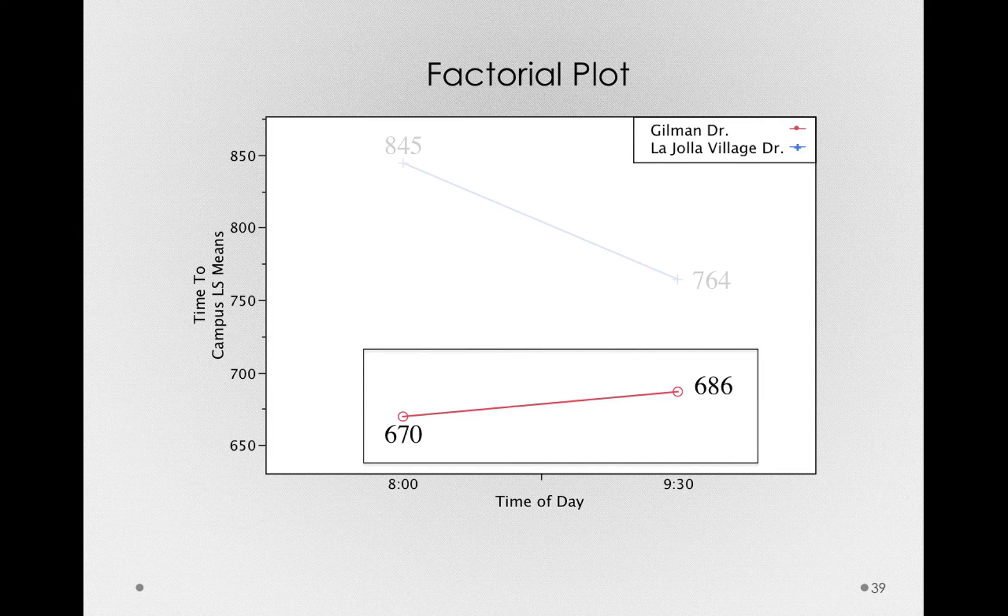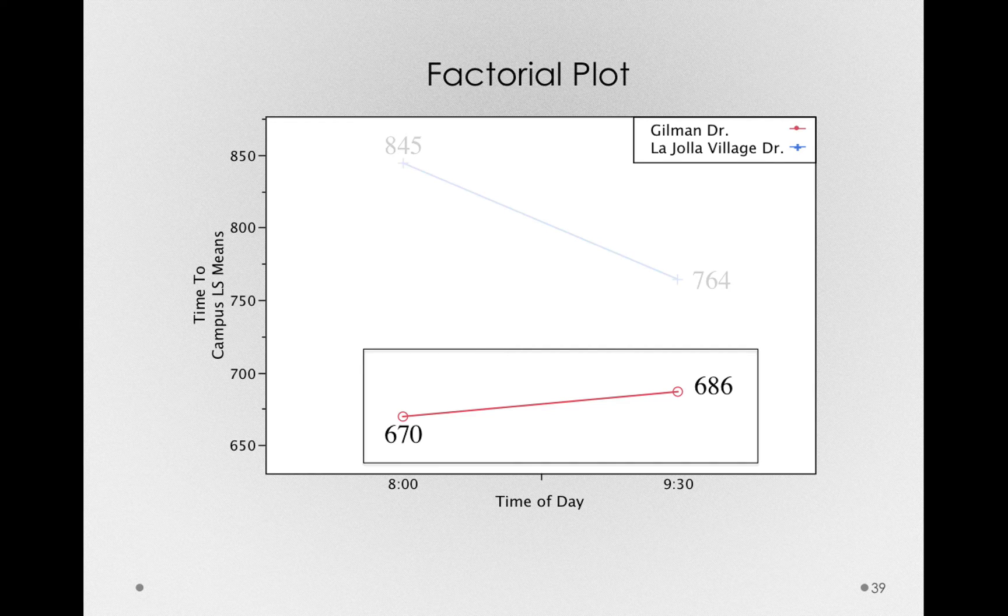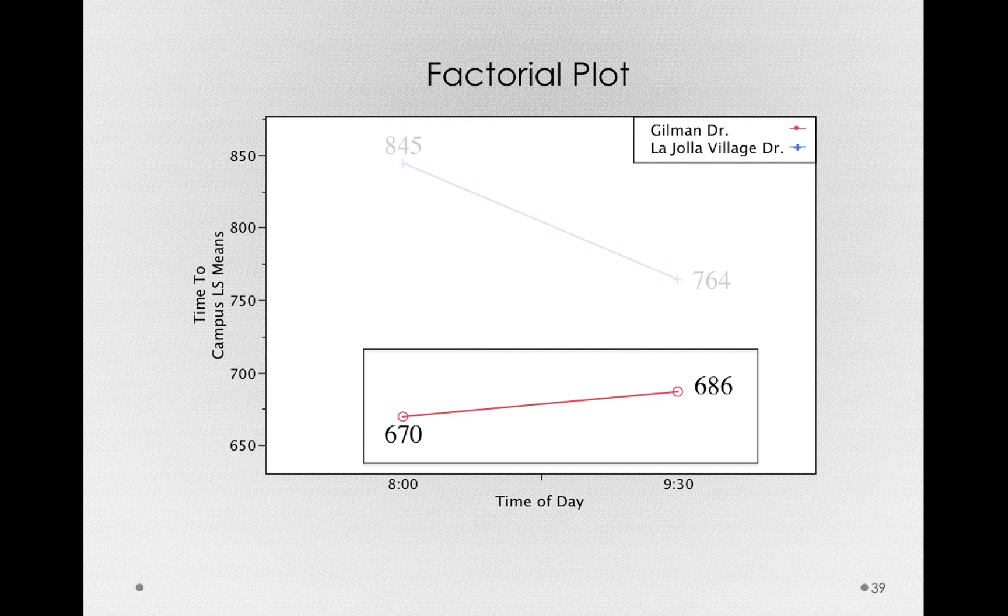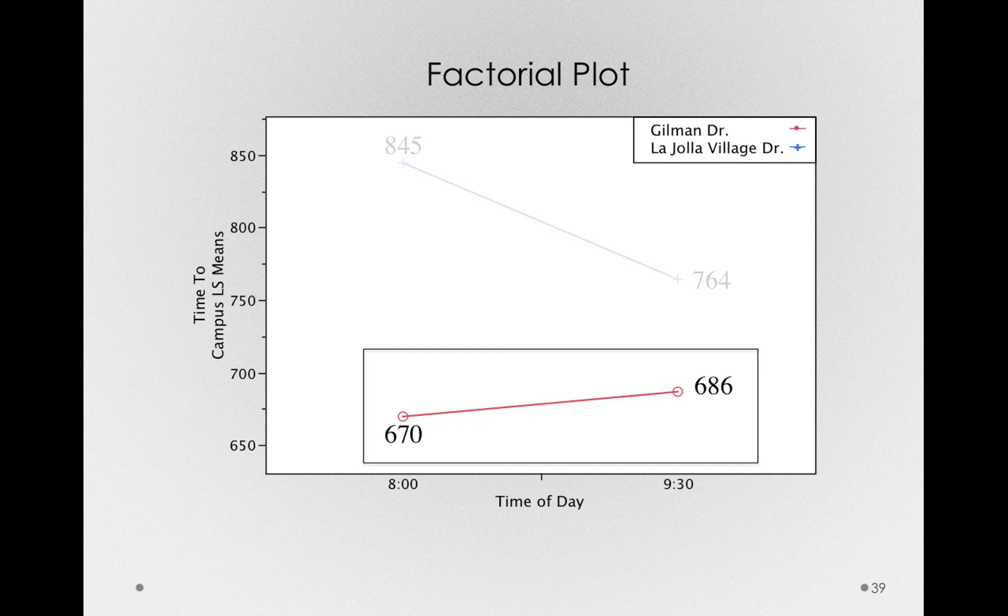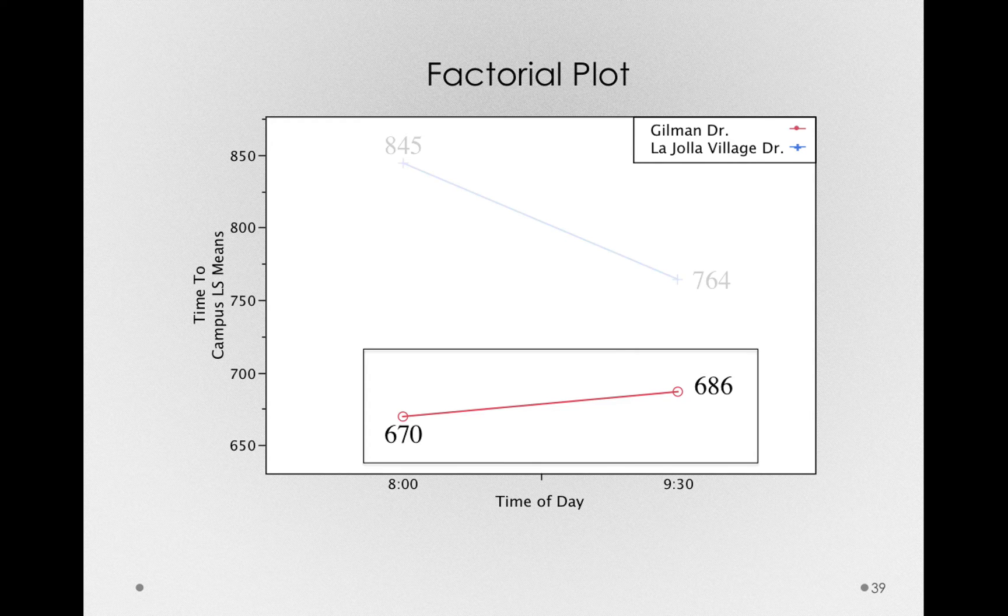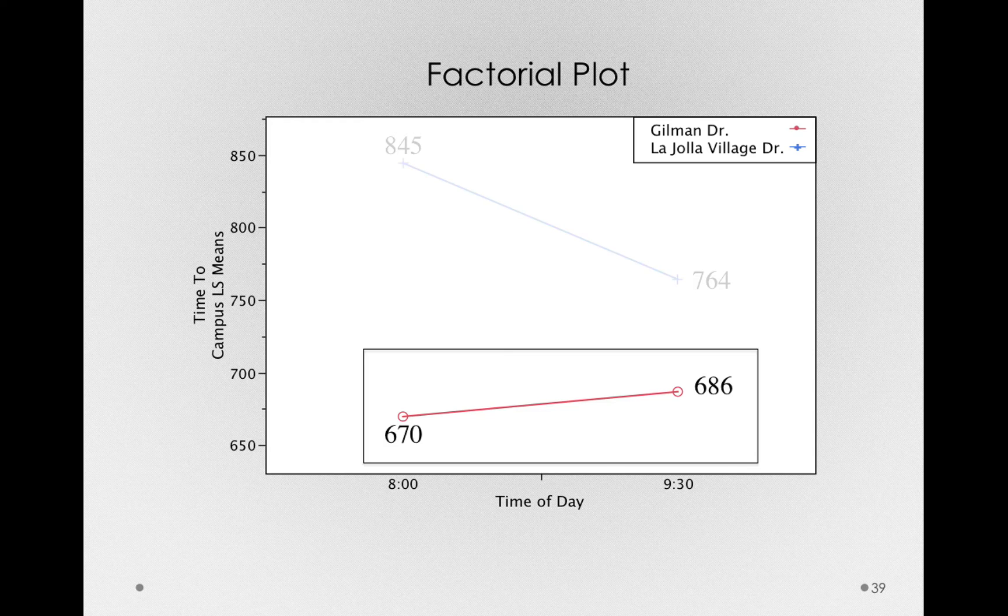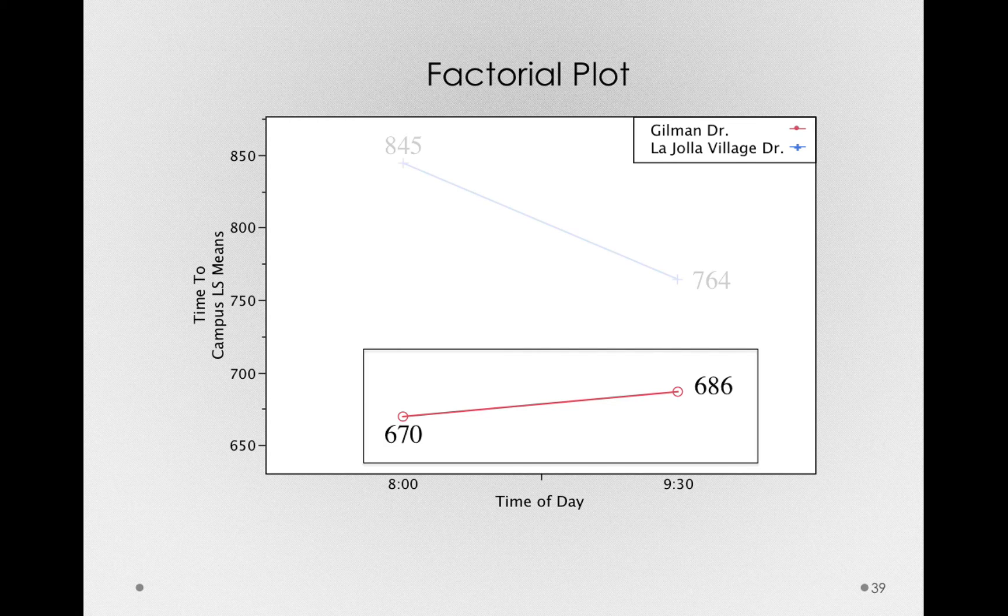Now, if I were to describe the effect of time of day and I had only observed Gilman Drive, I would actually say that the effect of time of day is to take longer if I go at 9:30 versus 8 a.m. Notice why that's the case. On average, it actually took a few more seconds to get to campus on average at 9:30 in the morning versus 8 in the morning.